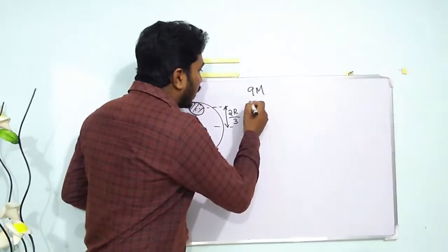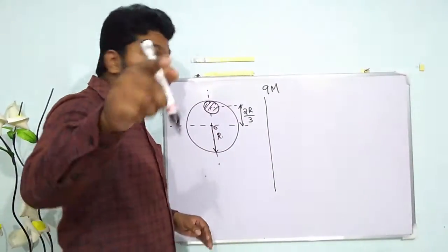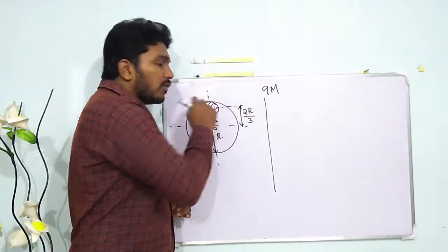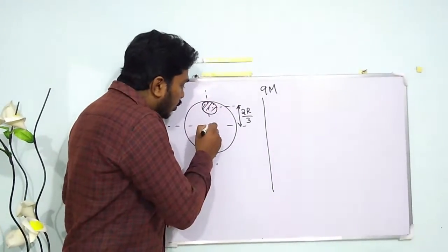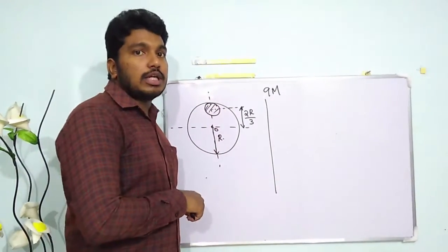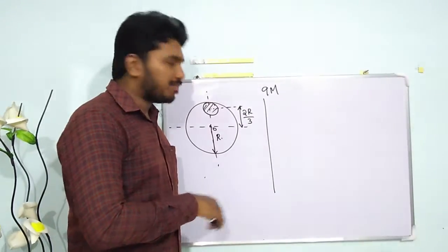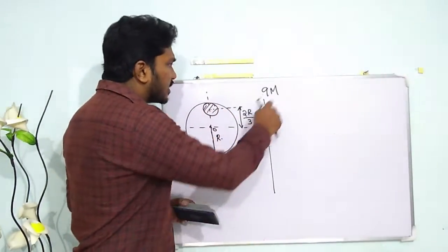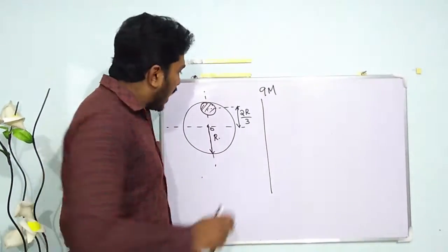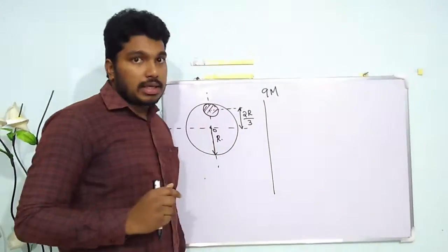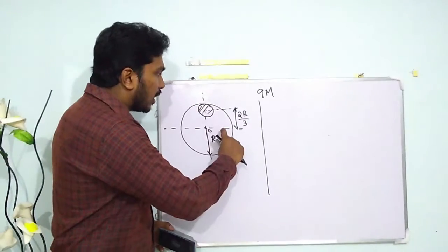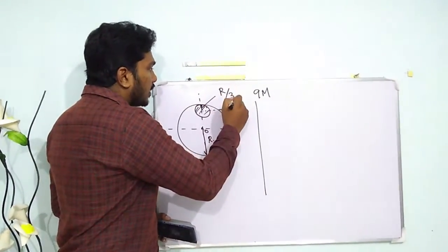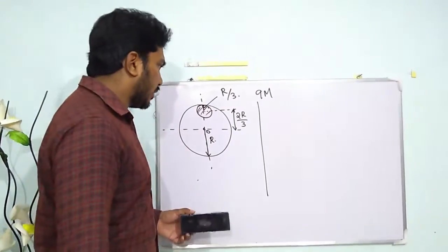We are supposed to find out the moment of inertia of the remaining disk after the removal, through the center and perpendicular to the plane. So it is given: the mass of the total disk is 9m, and this distance is given as 2r/3. Therefore the total radius is r, so the radius of the small disk will be r/3. This is given directly in the question.